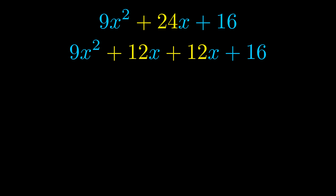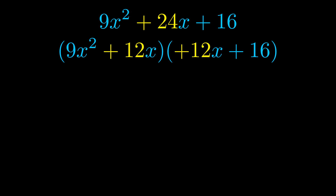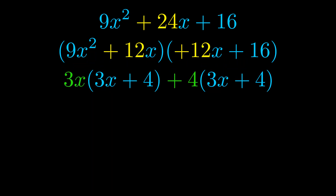Once we've done this, we go ahead and put parentheses around the first term and the last term so that we can take the greatest common factor out of both terms. We can see the greatest common factor is now outside in green.